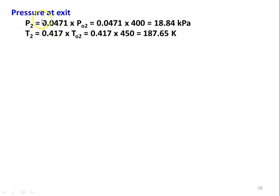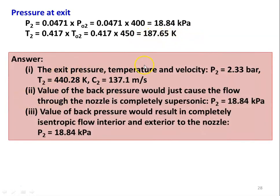Exit pressure P2 = 0.0471 × 400 = 18.84 kPa, T2 = 0.417 × 450 = 187.65 Kelvin. Summary of answers: with the shock wave — P2 = 2.33 bar, T2 = 440.28 K, C2 = 137.1 m/s. The back pressure for completely supersonic flow: P2 = 18.84 kPa. The back pressure for completely isentropic flow (supersonic) is also P2 = 18.84 kPa.